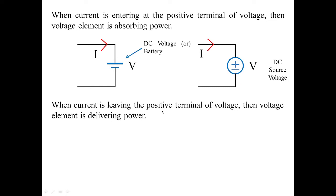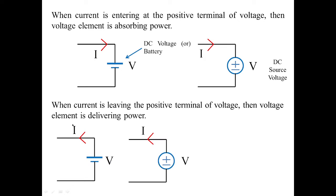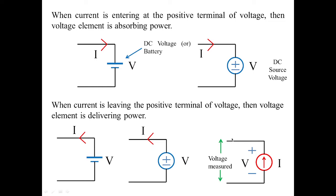When current is leaving the positive terminal of the voltage, then the voltage element is delivering power. You can see in the diagram: you have the positive symbol at the top, negative symbol downward, and the current is moving away from the positive terminal. If this is the condition, we treat the power to be delivered to the particular network. There is also a current source which is ready to deliver power; the voltage is measured across its two terminals.